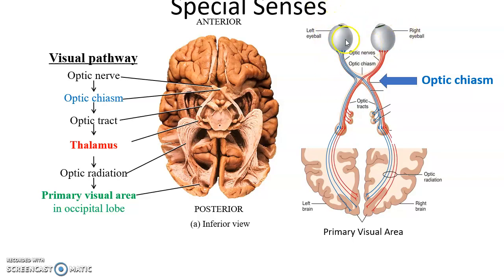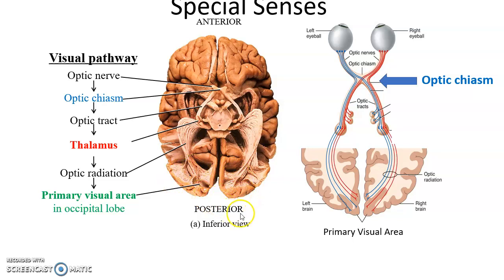We have the retina and the eyeballs. They send a signal to sensory neurons, which then form the optic nerves that cross over. So the right and left optic nerves cross over to form the optic chiasm. From there, the reorganized sensory nerves go through tracts to the thalamus. Additional interneurons then carry the information further back to the primary visual area in the occipital lobe — the back of the head.